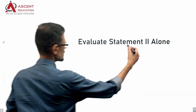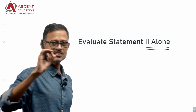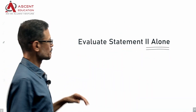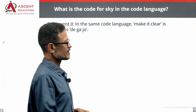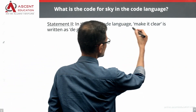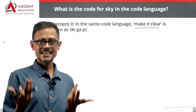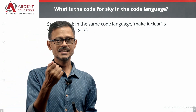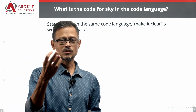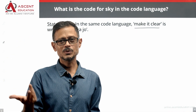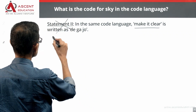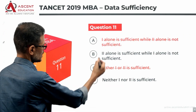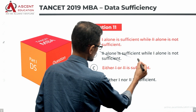Let's look at statement 2 alone and see whether that is sufficient. Statement 2 gives us another sentence in the same code language — but again, sky could be interpreted in multiple ways. So statement 2 alone is also not sufficient. We can eliminate answer option B.